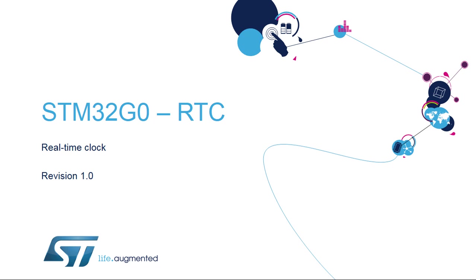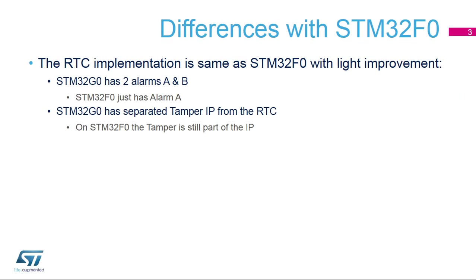Hello and welcome to this presentation of the STM32 real-time clock. It covers the main features of this peripheral which is used to provide a very accurate time base. The new features added to the STM32G0's RTC with regard to the STM32F0's RTC are two alarms and an RTC block separate from the tamper block.